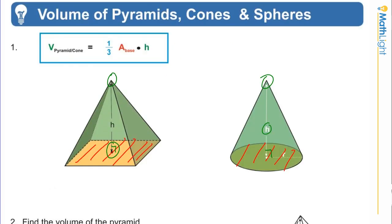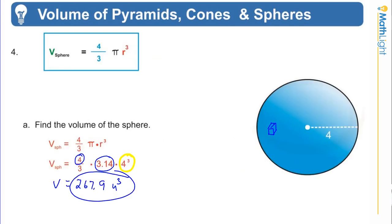In this lesson we covered two things: the volume of a pyramid or cone is one third times area of the base times the height, and the volume of a sphere is four thirds times pi times r cubed. Volume of pyramids, cones, and spheres — it's a fun chapter. When you get to geometry in ninth or tenth grade you'll go further with these, but you've laid a good foundation here.